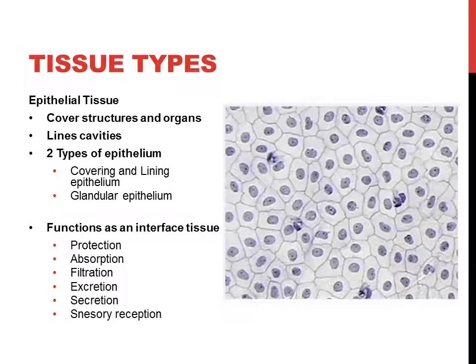Let's talk about epithelial tissue first. It covers structures and organs and lines cavities. It forms something called pleura — visceral pleura covers organs and parietal pleura covers the walls of cavities. There are two types of epithelium: covering and lining epithelium, which we've been talking about, and also glandular epithelium.